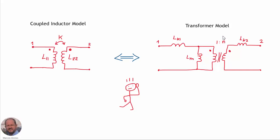For the Transformer Model we have in total four parameters: the leakage of the primary side, the magnetizing inductance, the turns ratio, and the leakage inductance of the secondary. This is a bit of a mess because we have four parameters here while we have only three parameters in the Coupled Inductor Model, but we know that these two models should be equivalent. So let's investigate what is going on here.